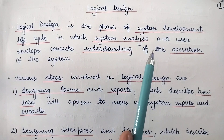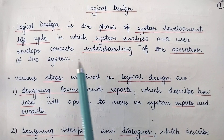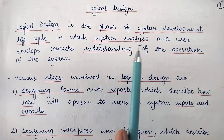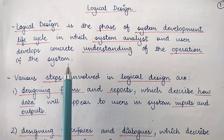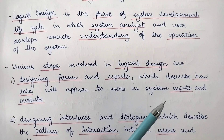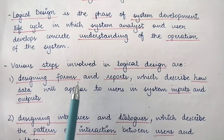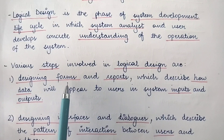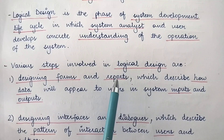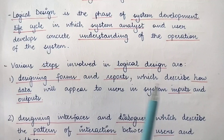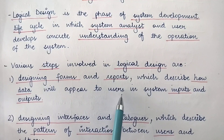During the logical design phase, the system analyst is trying to understand what the operations or functionalities of the system would be. There are various steps involved in logical design. The first step is designing forms and reports — how many forms would there be, what would they look like, how many reports would there be, and how would they look like.